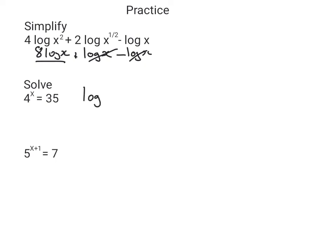On this next one we've got the unknown as a variable in the exponent, so we take logs of both sides: log of 4 to the x equals log of 35. We bring the power to the front: x log 4 equals log of 35. Now divide both sides by log 4 and we get x equals log of 35 divided by log of 4.